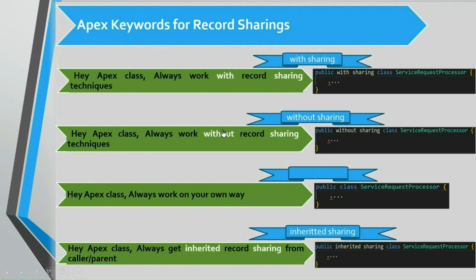All the sharing modes we have discussed — with sharing, without sharing, omitted sharing, and inherited sharing — are meant for record level access purposes only, not for object level or field level security. We have other keywords to handle object level and field level security, which we will discuss in another session.